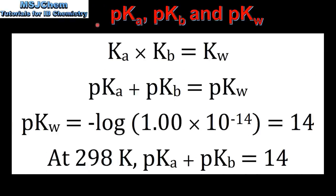Finally, we look at the relationship between pKa, pKb, and pKw. We saw that Ka × Kb equals Kw. If we take the log of both sides of this equation, we get pKa plus pKb equals pKw. pKw equals the negative log of Kw, which is 1.00 × 10⁻¹⁴ at 298K, and that equals 14. So at 298K, pKa plus pKb is equal to 14.